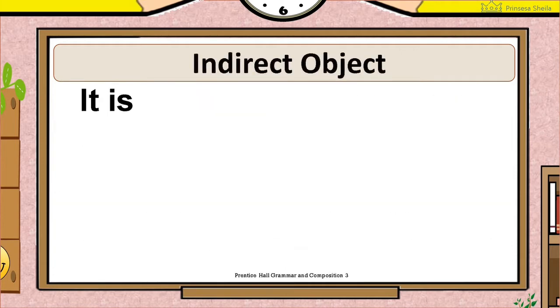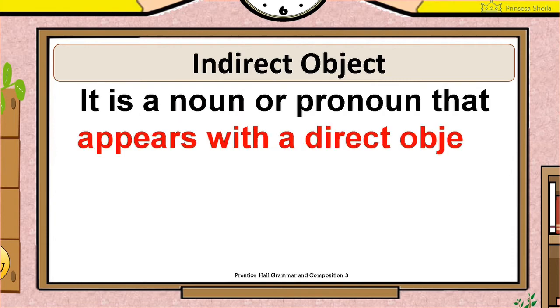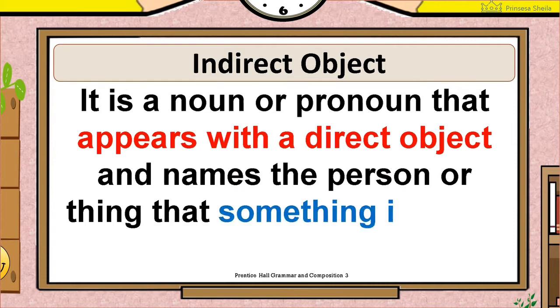The next type is indirect object. It is a noun or pronoun that appears with a direct object and names the person or thing that something is given to or done for.